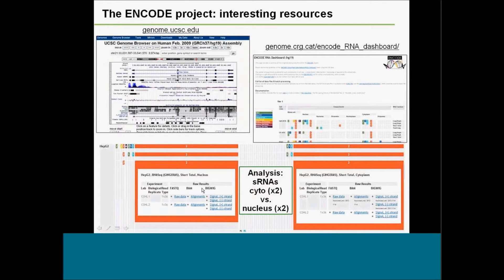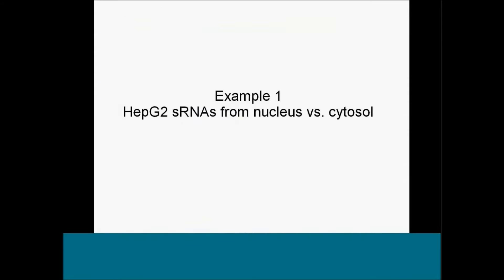You can get FASTQ files and BAM files. SixSolve works on alignment files — aligned reads. What we did was perform a differential gene expression using the entire RNA-seq workflow from SixSolve, comparing small RNAs from the nucleus versus cytosol.